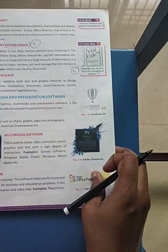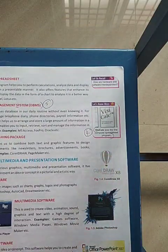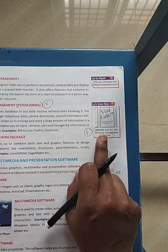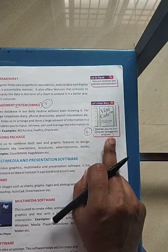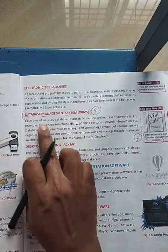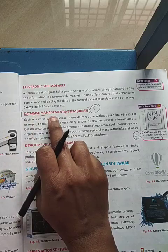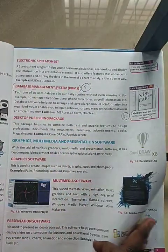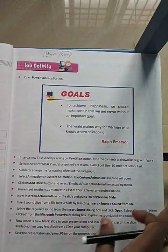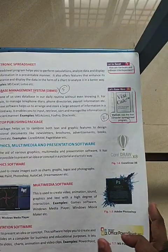The fourth one is on page number seven: what is VisiCalc? VisiCalc was the first computer spreadsheet program. The fifth one-mark is the expansion for DBMS — Database Management System. As of now, we will be having five book inside questions.